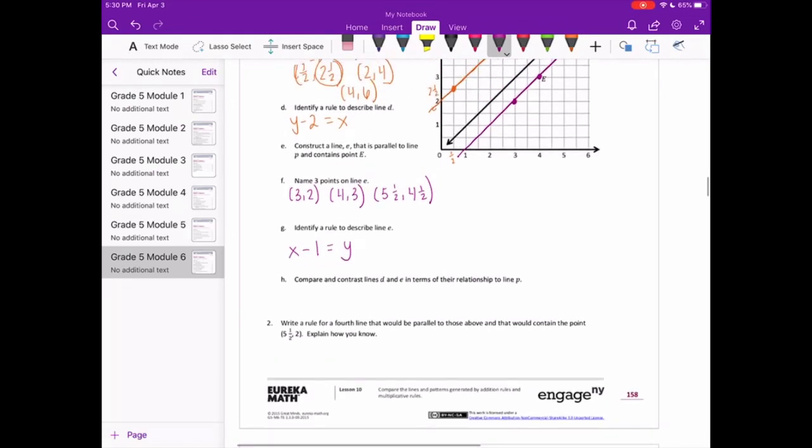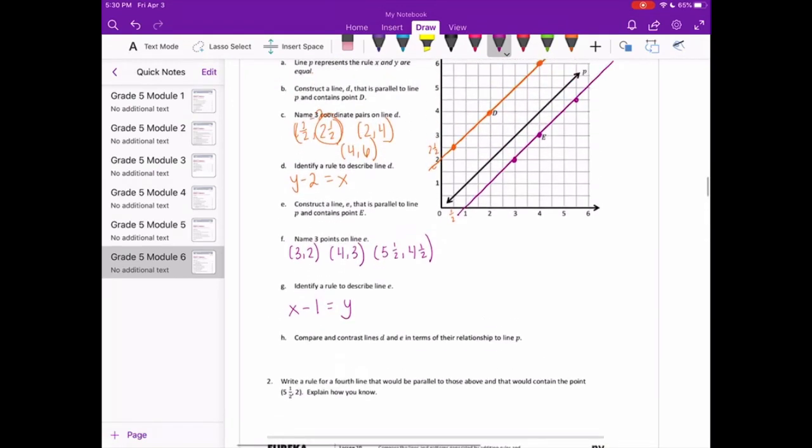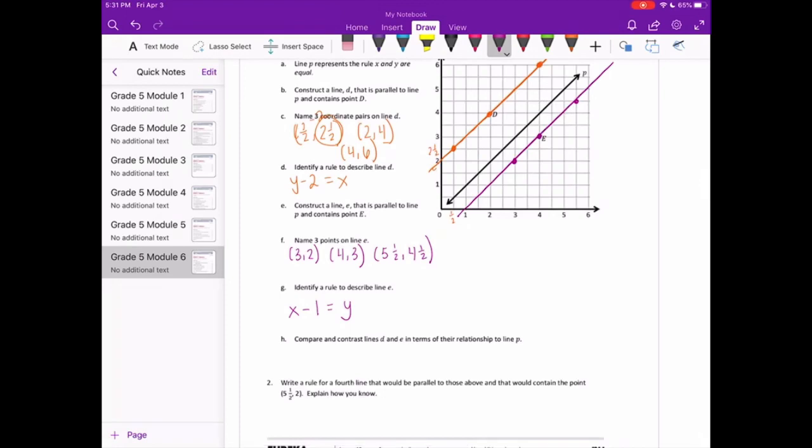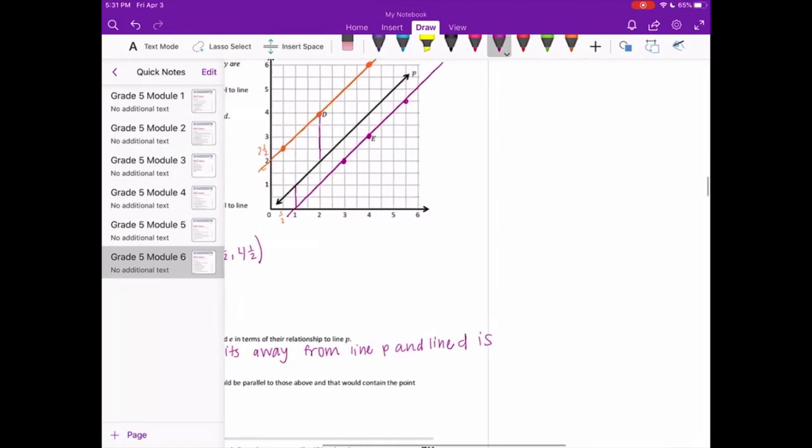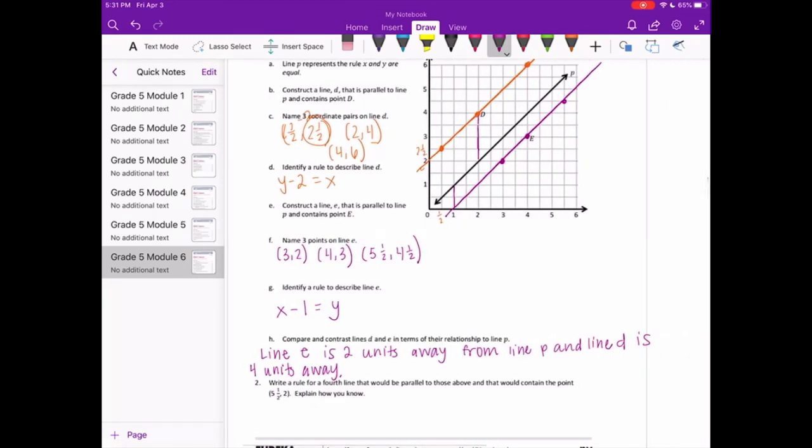Compare and contrast lines D and E in terms of their relationship to line P. So line E is closer to line P. It's 2 units away from line P. And line D is 4 units away. But we can say they are both increasing at the same rate because they're parallel, they're never going to intersect.